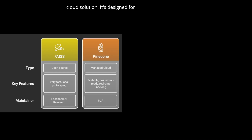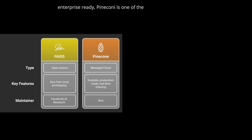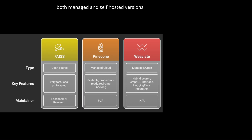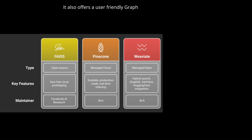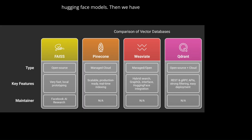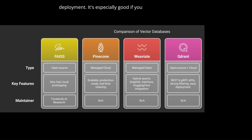Next is Pinecone, a fully managed cloud solution designed for production-scale use, with real-time indexing and advanced metadata filtering. If you want something scalable and enterprise-ready, Pinecone is one of the top industry picks. Weaviate is another powerful option available in both managed and self-hosted versions. What makes it unique is its hybrid search capability — it supports both vector similarity and keyword-based filtering, offers a user-friendly GraphQL interface, and integrates easily with Hugging Face models. Then we have Quadrant, which is open-source with a cloud option too, known for strong filtering support, REST and gRPC APIs, easy deployment, and GPU acceleration.